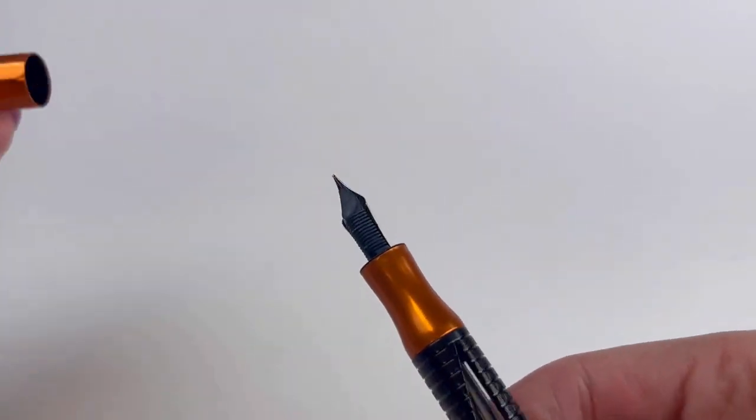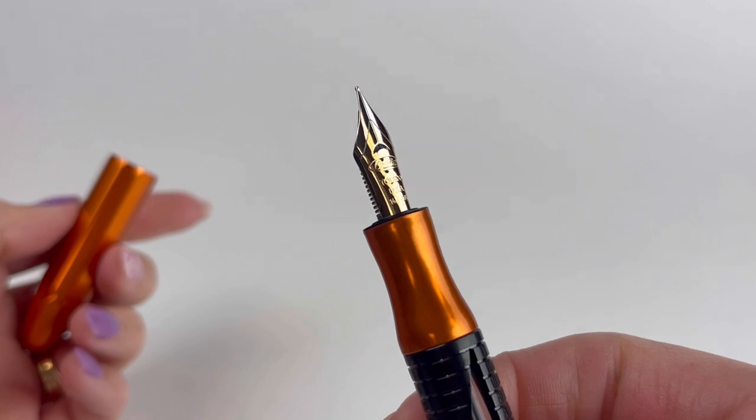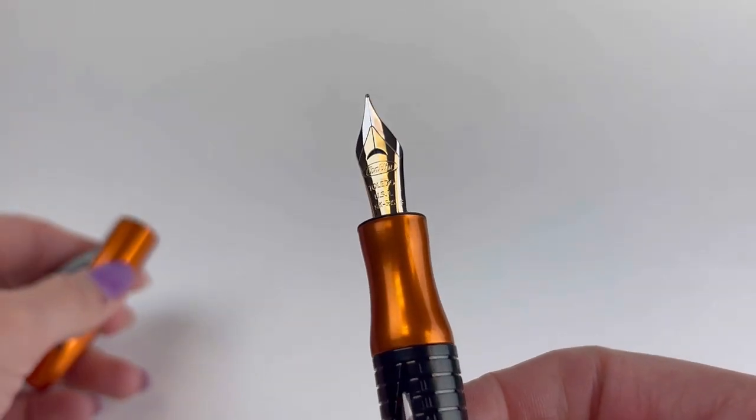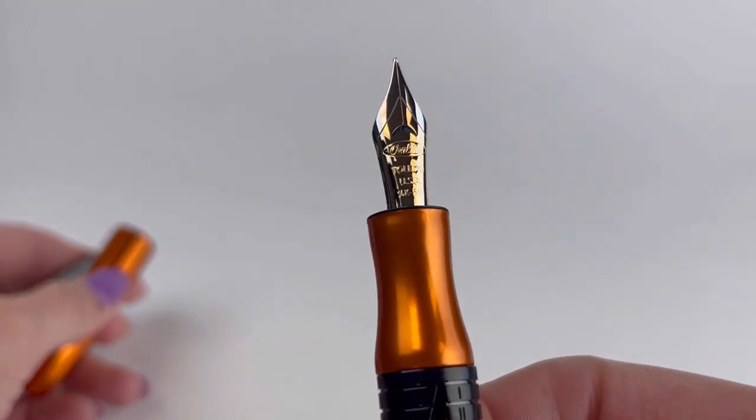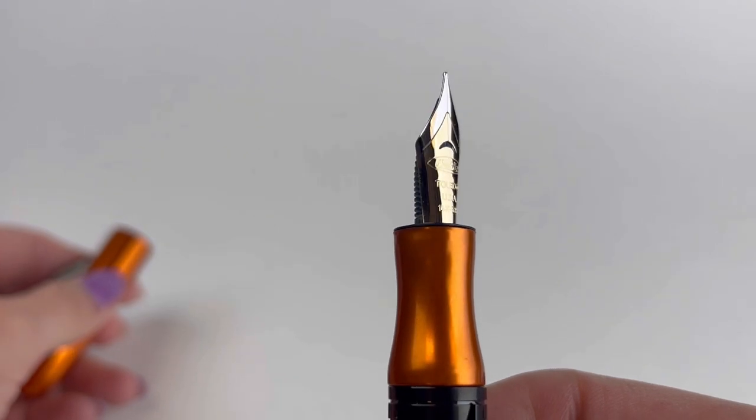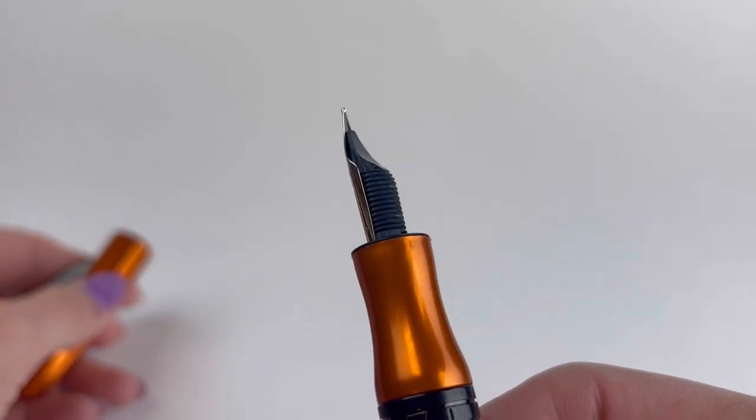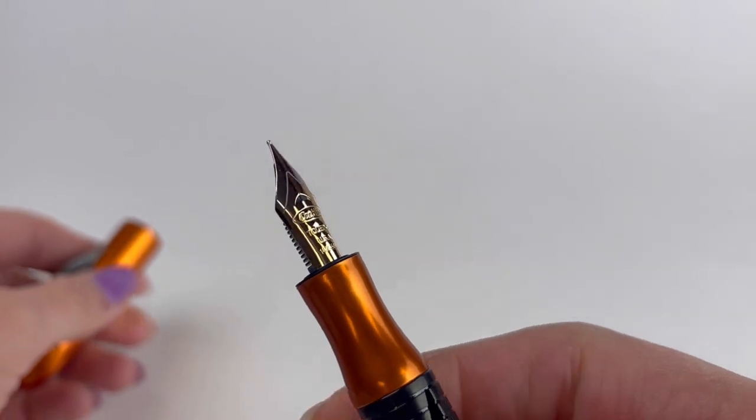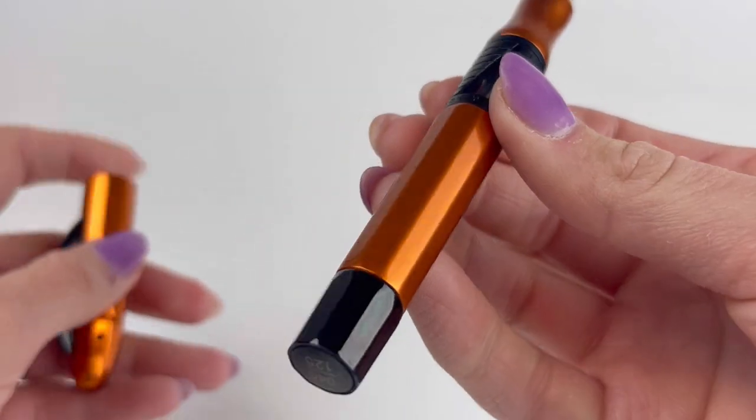It has a magnetic cap closure and also posts magnetically. It has a 14 karat gold nib and the pen is actually made of aluminum with that black PVD plated trim as I mentioned for the red, green and orange, but the blue pen has a palladium plated trim.